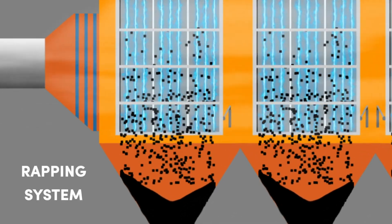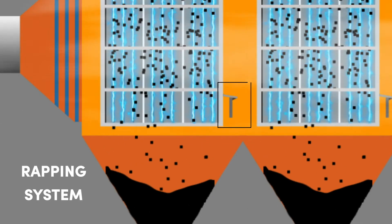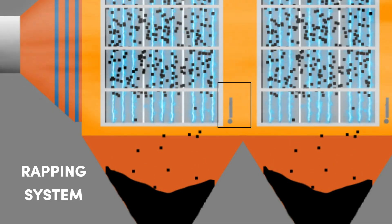The rapping system is responsible for removing the collected particulate matter from the collection surfaces.